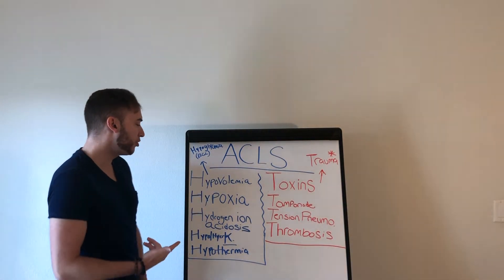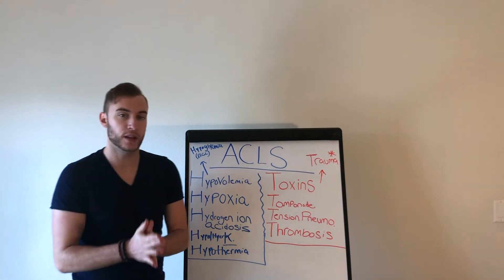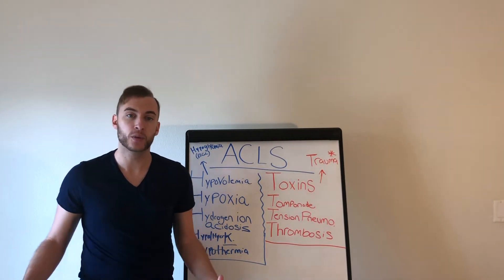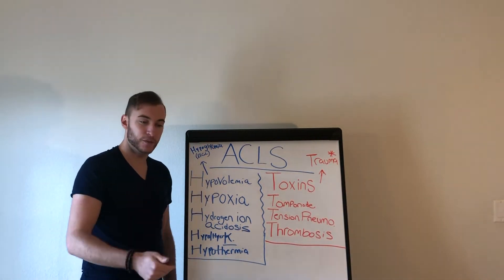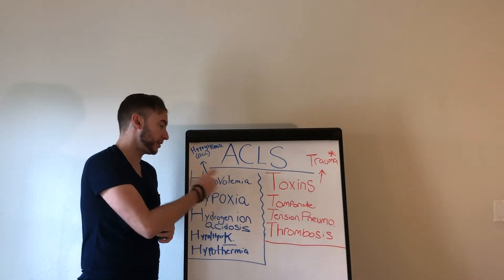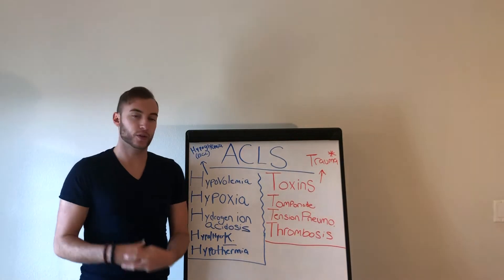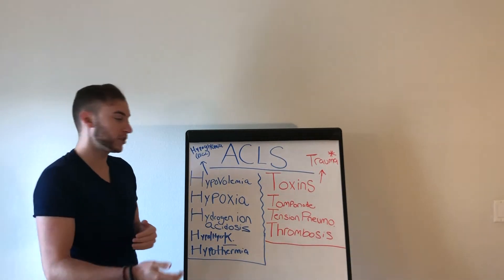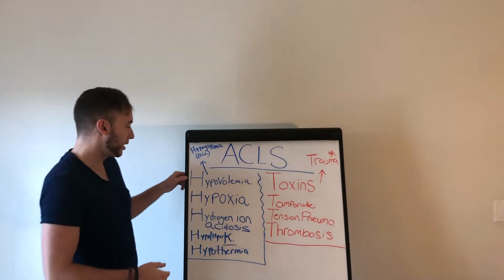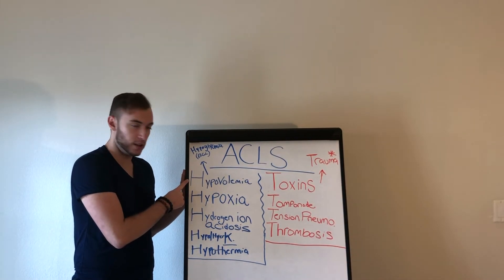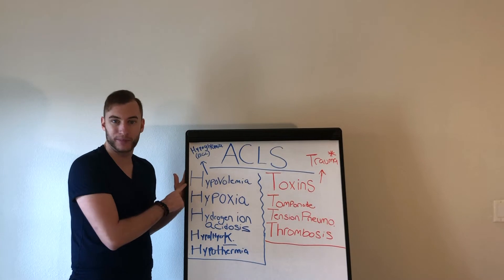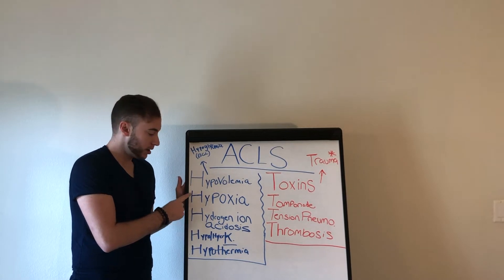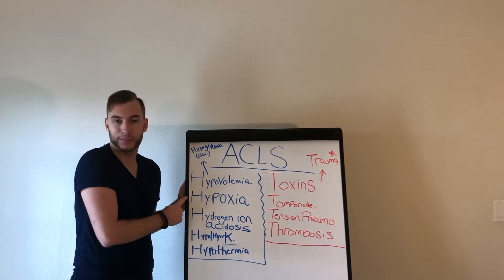So, the H's. First, we have hypovolemia — could it be a loss of blood or body fluid? Is the patient hypovolemic? Do they need fluid or blood? Next is hypoxia. Is the patient hypoxic? If you're intubating or using a BVM, what's the O2 sat? Once you get a line in and have that bag going, you're treating hypovolemia. Once you have them on the correct airway and you're oxygenating and ventilating as best you can, hypoxia is being taken care of.